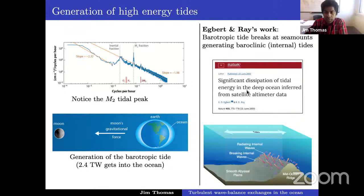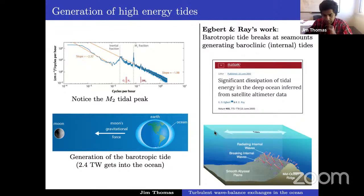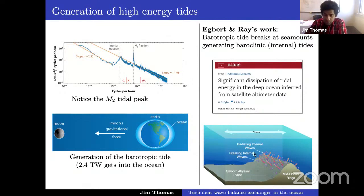Over the past few years, satellite altimeter datasets — particularly Egbert and Ray — showed that a lot of tidal energy gets converted to internal gravity waves in the deeper parts of the ocean. The barotropic tide has no vertical structure, so it crashes against seamounts and generates internal gravity waves. This creates high internal gravity wave energy in regions with seamounts. In the global map, regions with many waves correspond to high internal tide energy generated at seamounts.